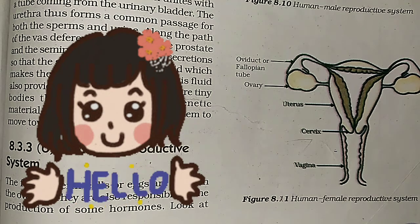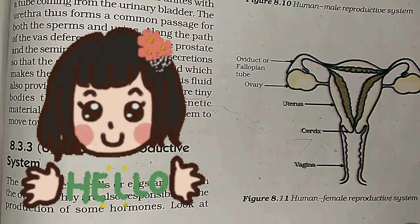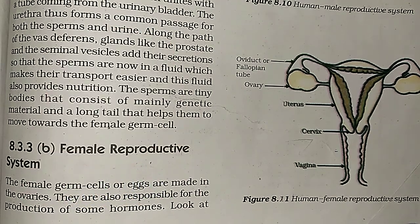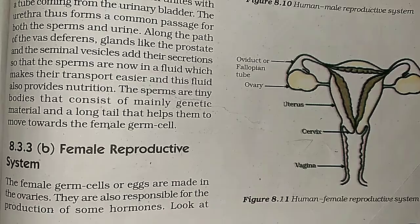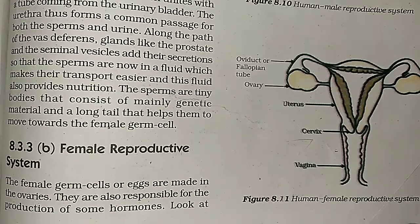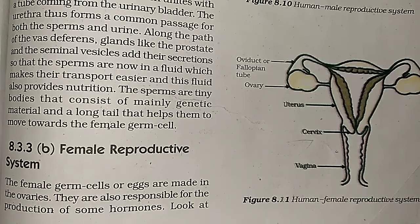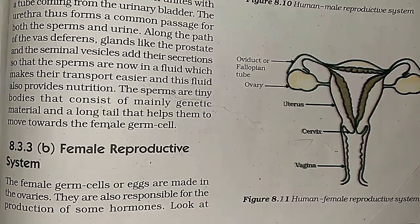Hello friends. Today we will discuss about the female reproductive system. The female reproductive system is a system of specialized organs which are needed for sexual act in a female.